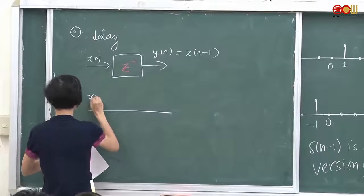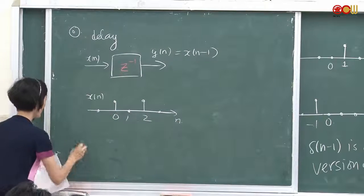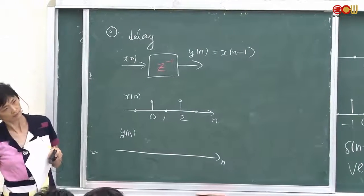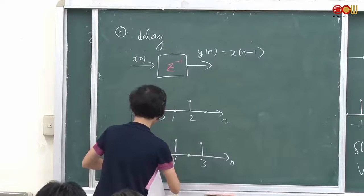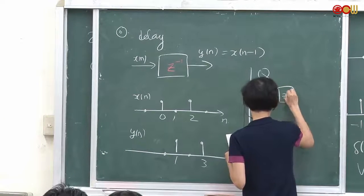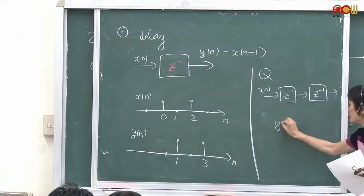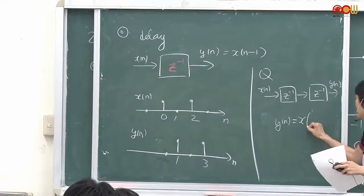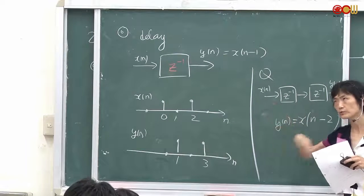For example, if xn has samples at 0, 1, 2, the output will be shifted to the right by 1, so the two non-zero samples will come at 1 and 3. Suppose we have two delays. What's going to be the output? yn is xn minus 2 — the output is the value of the input two units of time back.